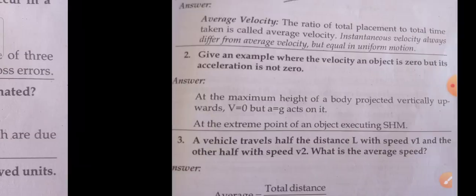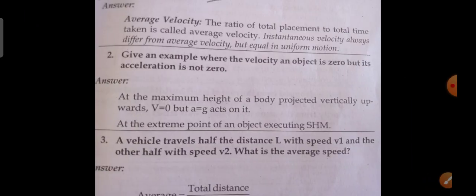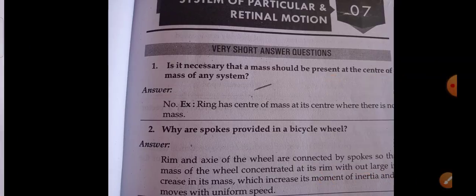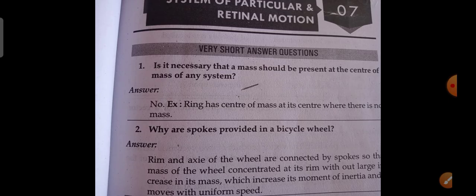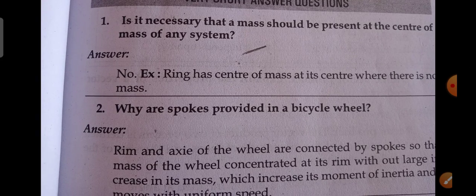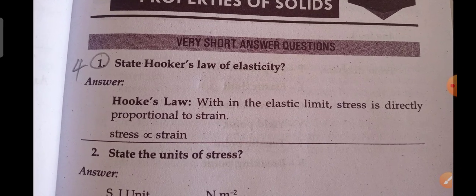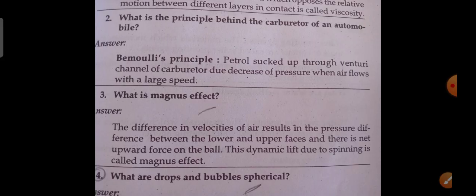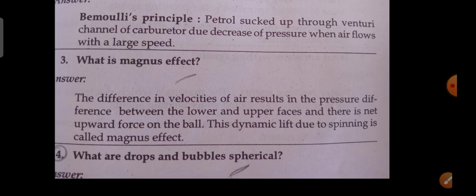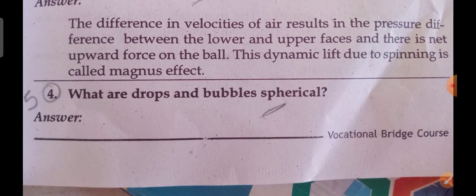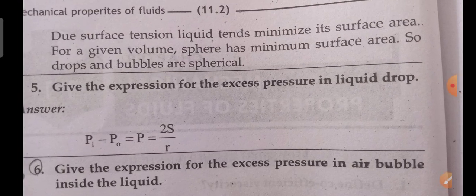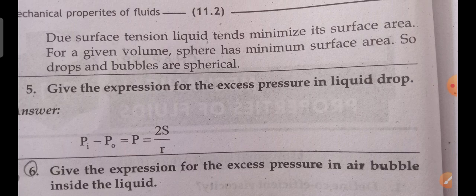Next, how can systematic errors be minimized or eliminated? Or distinguish between fundamental units and derived units. These are the answers. Give an example where the velocity of an object is zero but its acceleration is not zero. Next, is it necessary that a mass should be present in the center of mass of any system? Second one also, why are spokes provided in bicycle wheels? State Hooke's law of elasticity. Next, what is the reason? Why are water drops and bubbles spherical?